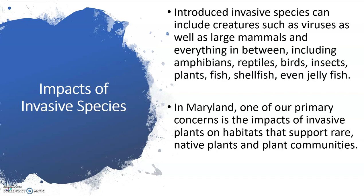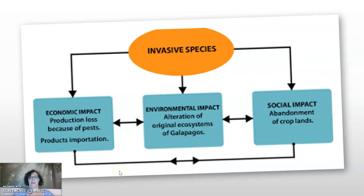In Maryland, one of our primary concerns is the impacts of invasive plants on habitats that support rare and native plants. Here's a very interesting invasive species chart. You can see it's a very nice flow chart — from invasive species, it can go one of three impacts, and each one of those three impacts can actually impact one of the other impacts.